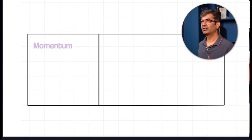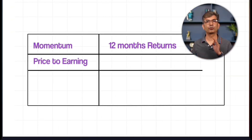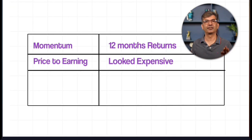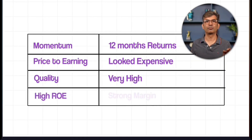Let's pick up some case studies. FMCG sector in 2017 to 2018: Momentum showed stable 12-month returns. Value — the price looked expensive, so value alone would have rejected it. Quality was very high: high ROE, strong margins. But the multi-factor model still picked FMCG leaders like HUL, Dabur, and Nestle, and they outperformed defensives during the macro slowdown.